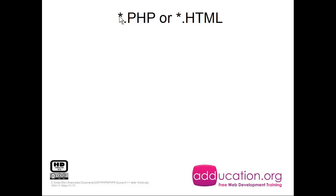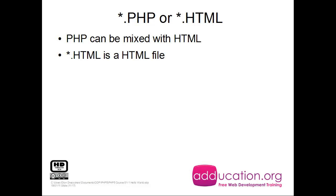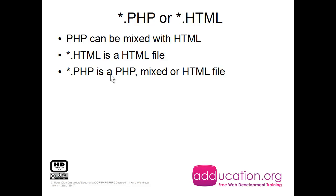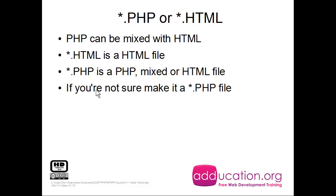Now the types of files. We have .php or .html files. PHP can be mixed with HTML — you can use both in a single file. An .html file is just HTML. A .php file is a PHP file but it can still be mixed with HTML, or it can be plain HTML without any PHP. If the extension is .php, the PHP engine on the server will check if there is any PHP code. With .html there's no need, because the server knows it's only HTML. If you're not sure whether a file will contain PHP, just make it .php — it will be interpreted anyway. Otherwise you'd have to rename it later.